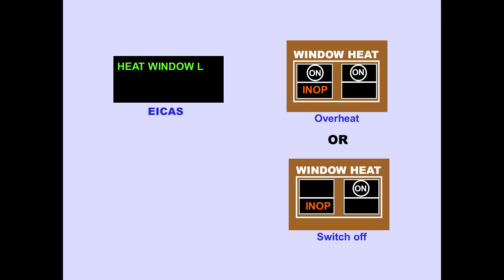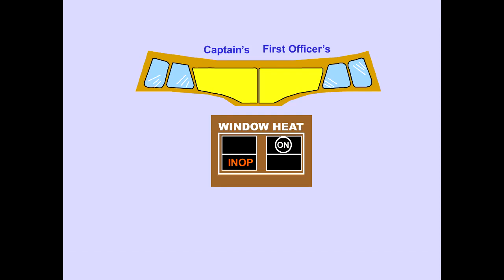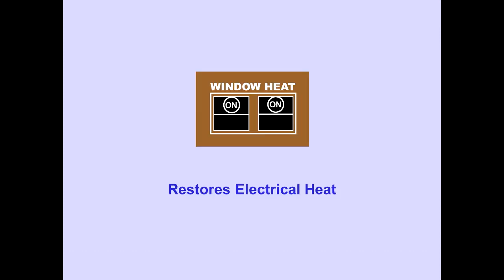The respective inoperative light illuminates in both cases and power is removed from the window. Pushing a window heat switch off resets the window heat system. After a 10-second cool-down period, pushing the respective window heat switch on restores electrical heat.